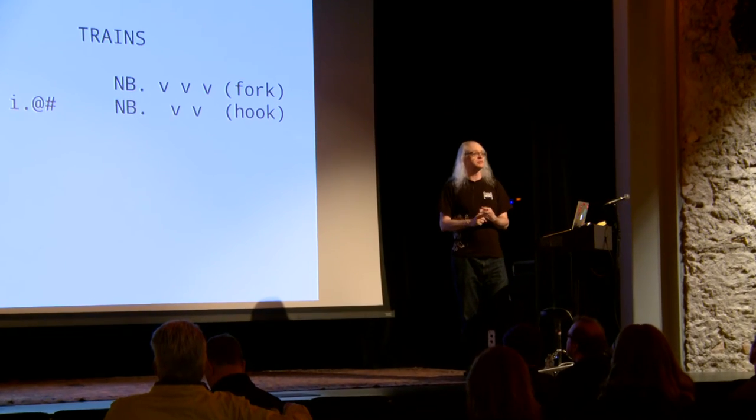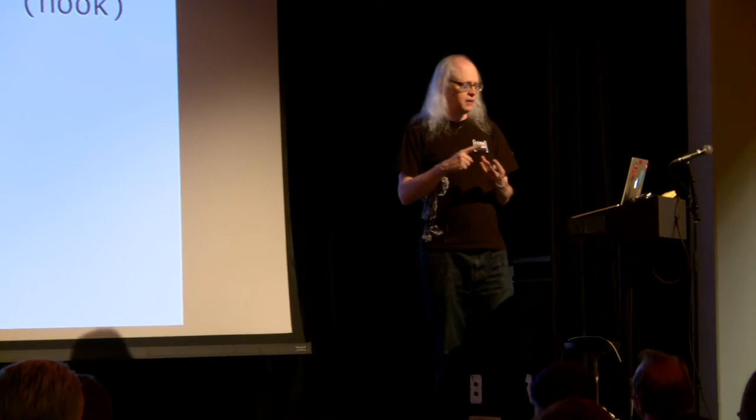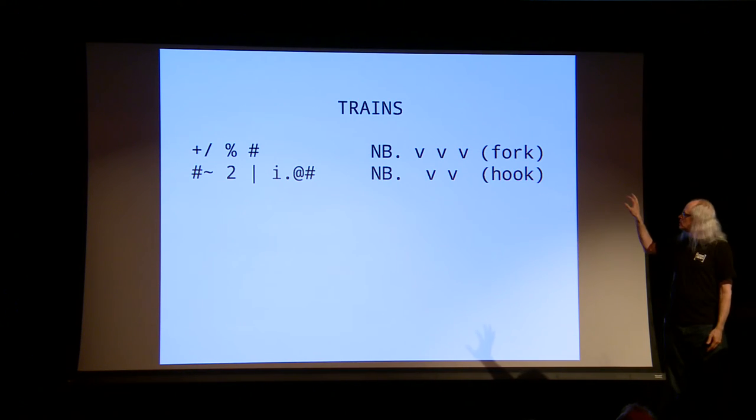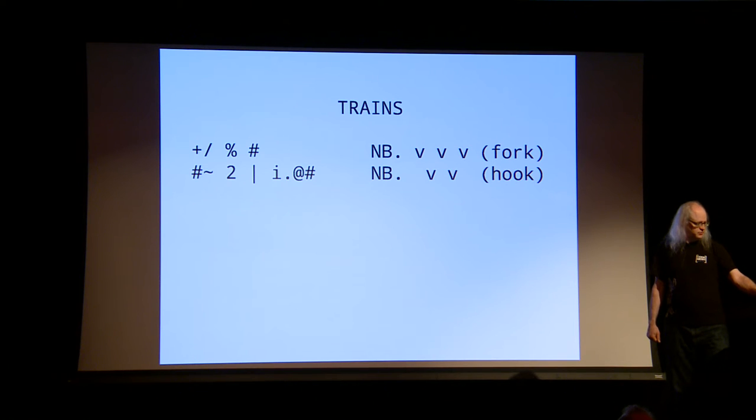These, like all J verbs, are ambivalent. That is, they can work with either a single argument or two arguments. They may not be defined, but in terms of the syntax, either one is interpreted by the parser. So, in the case where we're working with a fork, the argument to that train is first presented, in effect, to the outer verbs. And the results of those verbs calculations are the argument to the inner verb, which always receives two arguments, as is suggested by its position in between the other two verbs. The hook is similar, and I've got examples of both coming up.